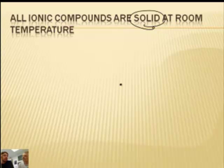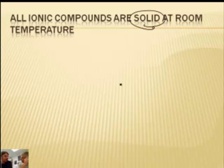So Mr. Sams, what state of matter are ionic compounds? Solid at room temperature — always solid at room temperature. Could you ever make them a liquid? You could make them a liquid, but you'd have to heat them up really, really hot. The melting point of sodium chloride is in the neighborhood of 3000 Kelvin or something like that, so it's really hot.